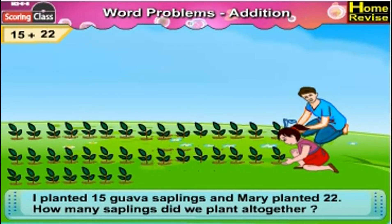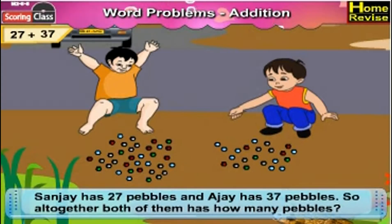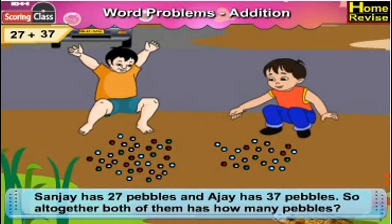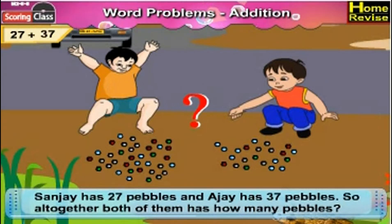Hey kids, let us solve some more sums. 27 plus 37. Now Sanjay has 27 pebbles and Ajay has 37 pebbles. Altogether, how many pebbles do both of them have?